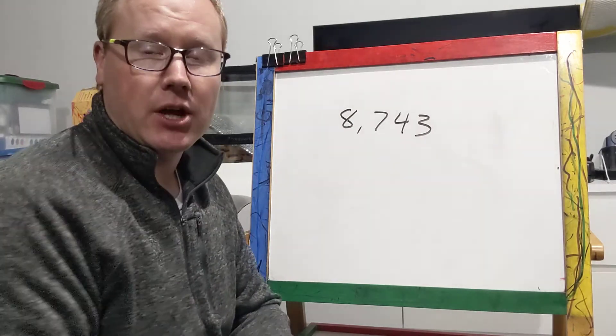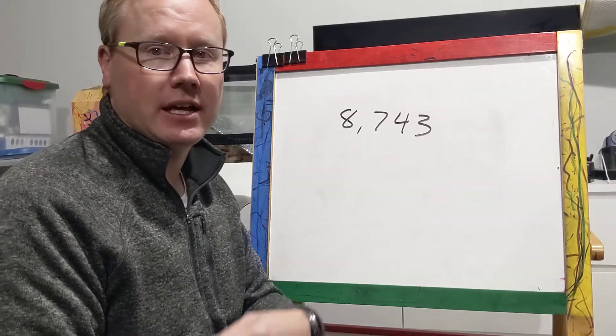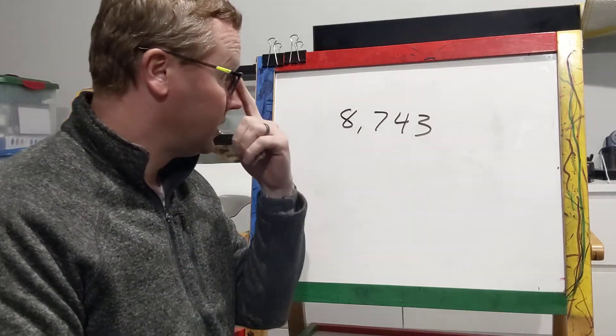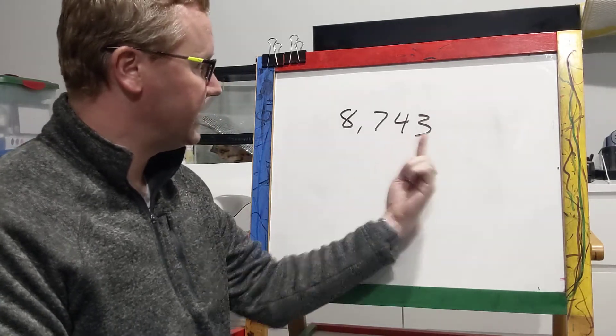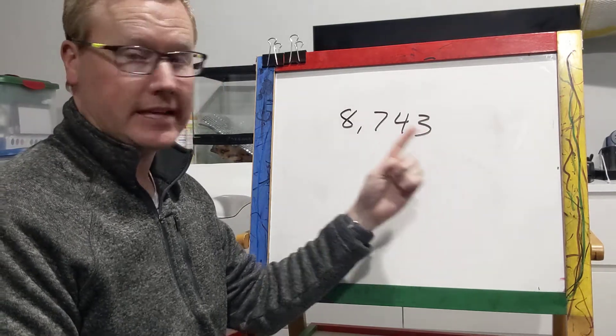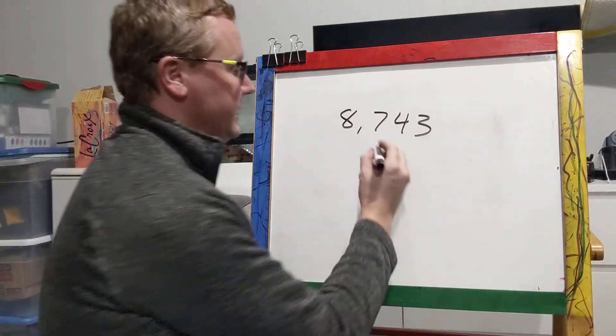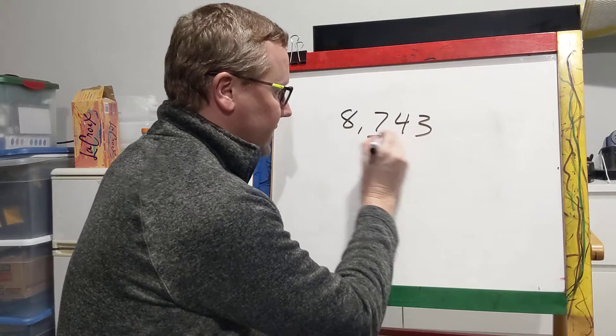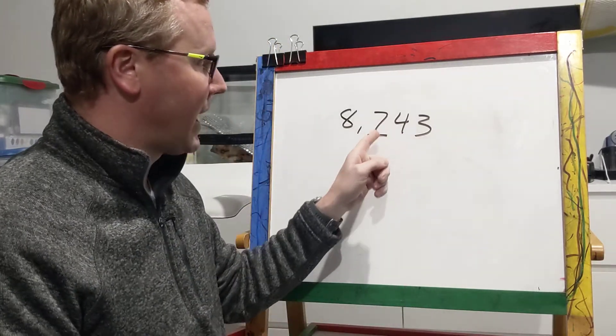Eight thousand seven hundred and forty three. I might say round to the nearest hundreds place. So first off, which digit here is in the hundreds place? Yes, the seven is in the hundreds place.